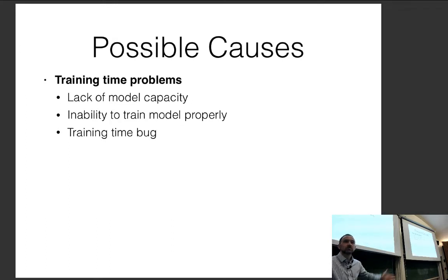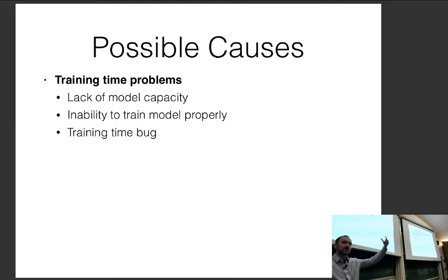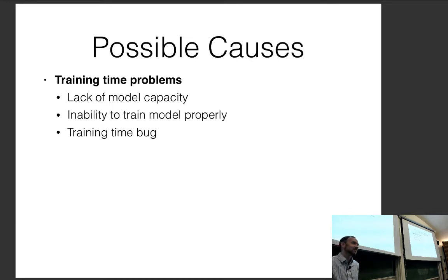Bugs are another reason. If you create a neural network with a big model but forget to connect your final predictor to the rest of the network, it's not going to predict anything. I have seen this bug before myself — it happens to the best of us.